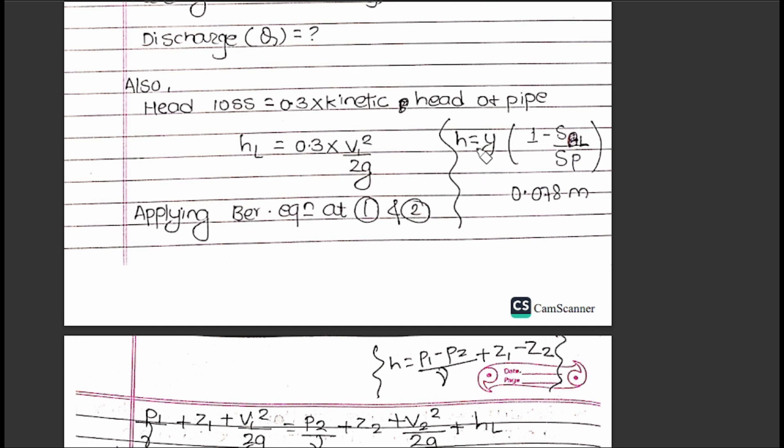The difference in pressure equals 0.26 × (1 - 0.7/1) = 0.078 meters. Now applying the equation from continuity...